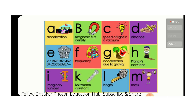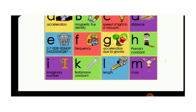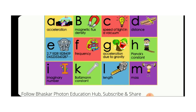Small f is the frequency. Small g is the acceleration due to gravity. H is the Planck constant. I is the imaginary number — this imaginary number we know from mathematics, but it is also used in physics. K is the Boltzmann constant.